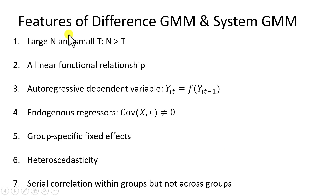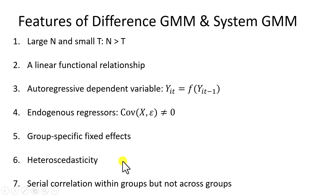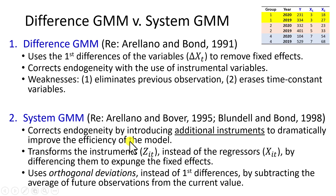The features of the two estimators are as follows: large N and small T, where the number of groups N must exceed the number of time periods; a linear functional form; autoregressive dependent variable; endogenous regressors; group-specific fixed effects, which is the heterogeneity factor; heteroskedasticity, which is unequal error variance; and serial correlation within groups.